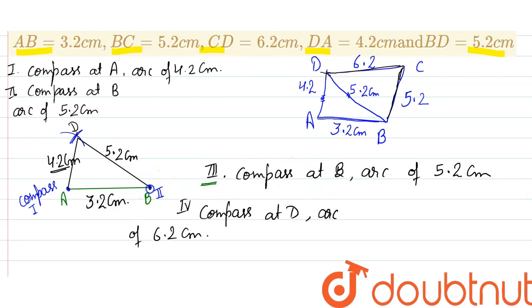In the third step, we will put our compass at B and take a distance of 5.2 centimeters in the compass and just mark an arc like this.